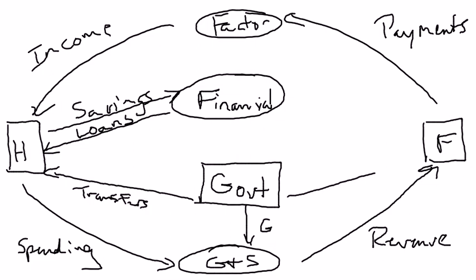Technically, it also makes transfer payments to some firms. We abbreviate that TR in the textbook. Transfer payments are spending by the government where, by definition, they do not get a good or service in exchange for it. Classic ones would be unemployment insurance — you're getting payments from the government because you meet certain criteria, one of which is you're not employed, and if you're not employed, you're not producing a good or service. Other common forms of transfer payments would be welfare payments, Social Security payments, Medicare payments. These are all payments that the government is making and is not getting a good or service in exchange for them. The spending is occurring simply because the individuals meet certain criteria.